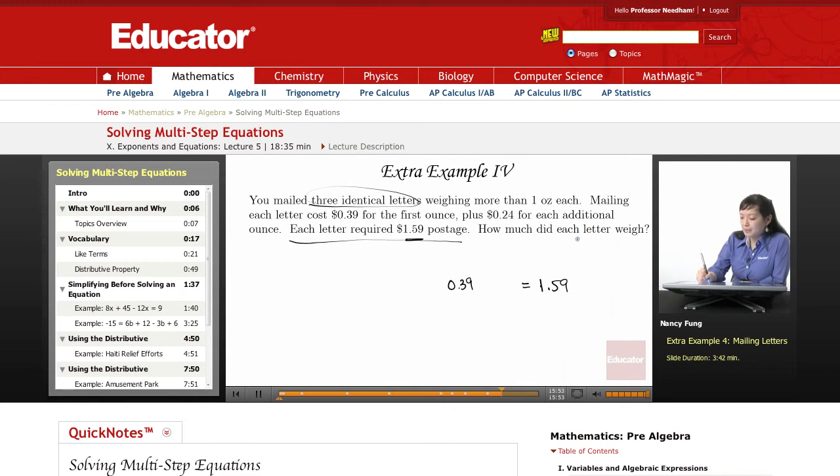We could say total ounces equals T. It's probably not a good idea to use O for ounces, because it looks like a zero. So the total ounces is T.